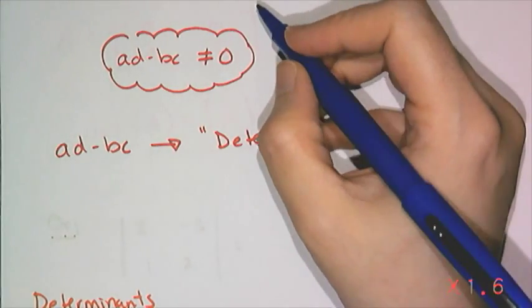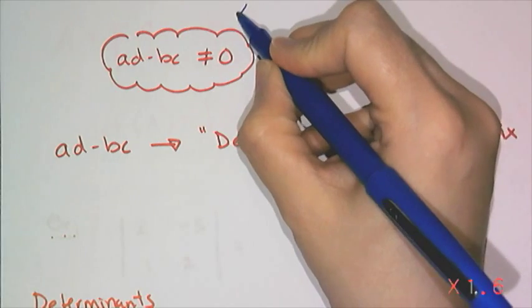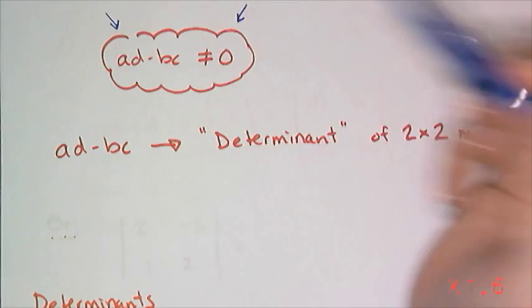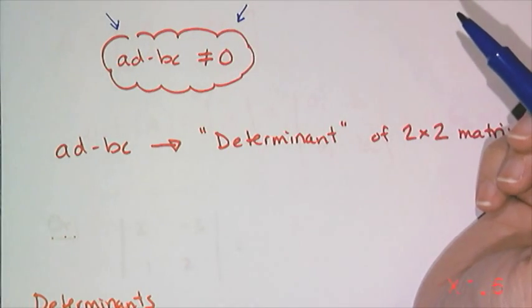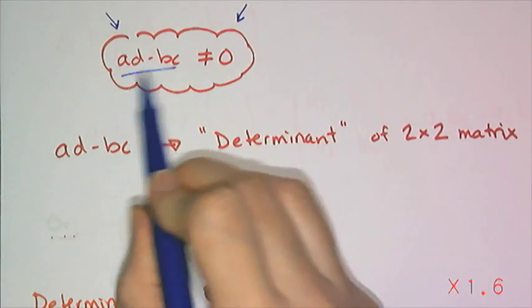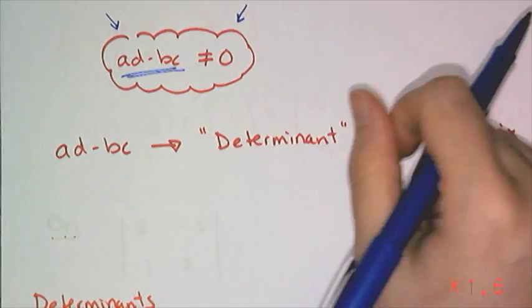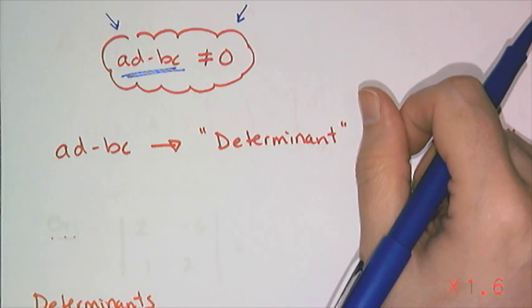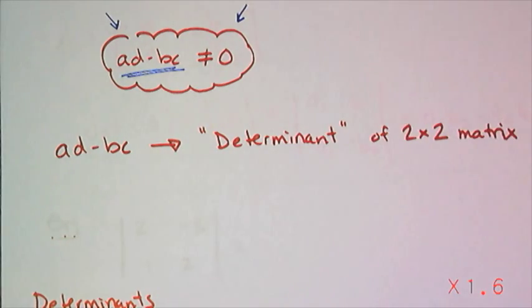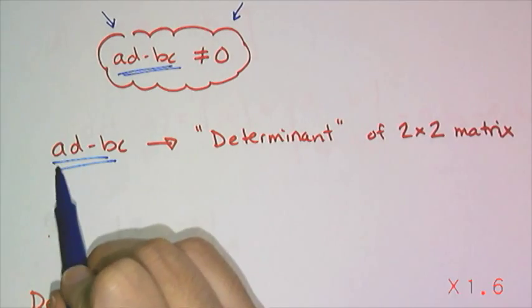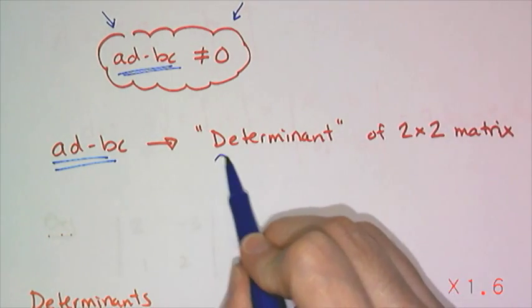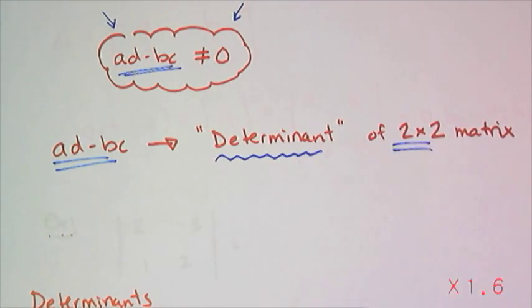In the investigation in class, we realized that this AD minus BC could not equal 0 if the matrix was invertible. So this AD minus BC determined whether or not our matrix had an inverse. And so mathematicians started calling AD minus BC the determinant of a 2 by 2 matrix.